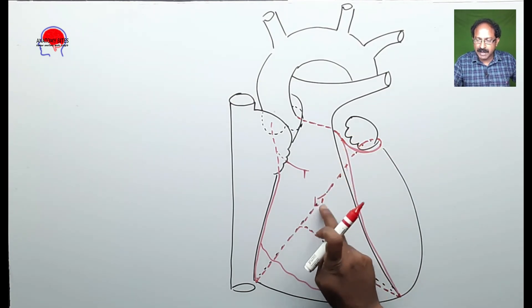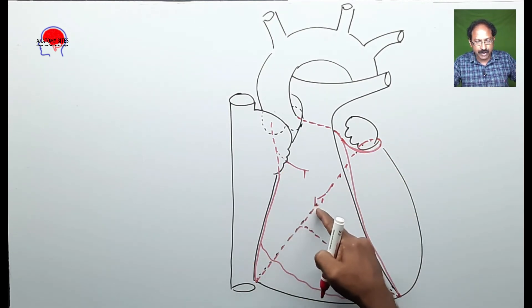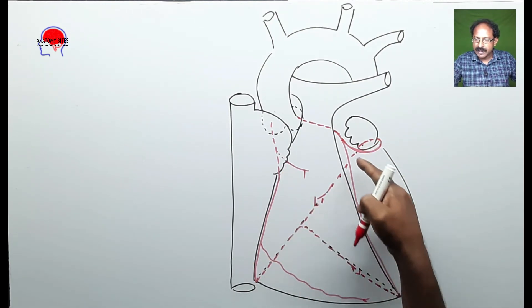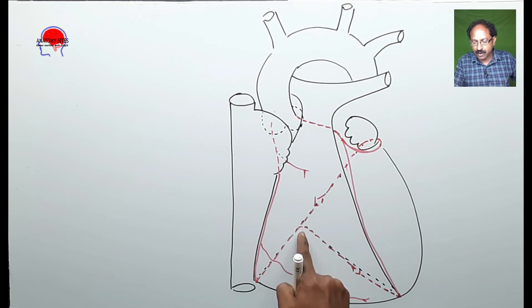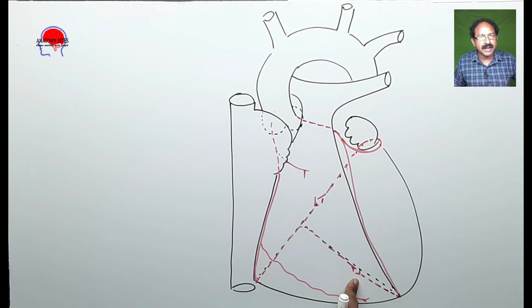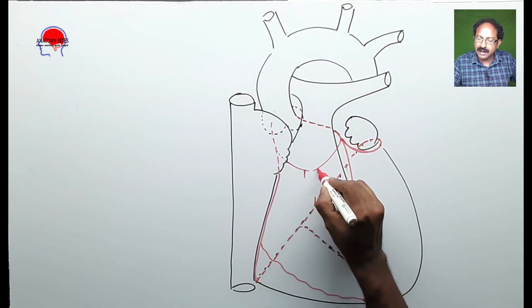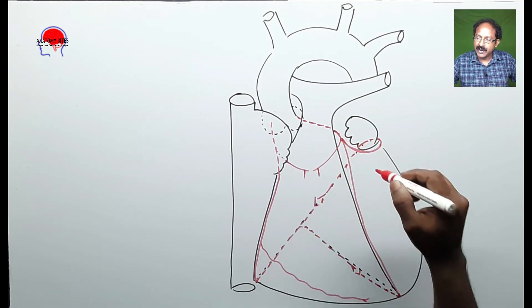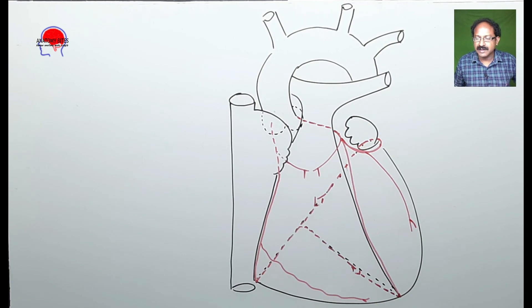Now we have these two major anastomoses. One is the circumflex artery anastomosing with the right coronary artery to the left of the crux. The other is the anterior interventricular artery anastomosing with the posterior interventricular artery — a branch of the right coronary artery — at the lower part of the posterior interventricular groove. The left coronary artery also gives a left conus branch and a left marginal artery. You can easily draw the coronary arteries with the outline of the heart.